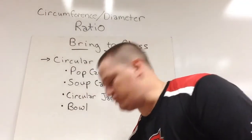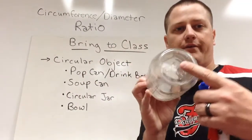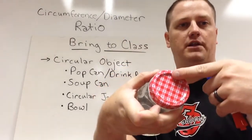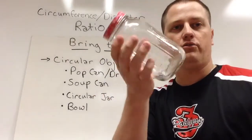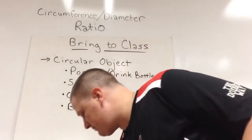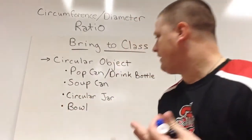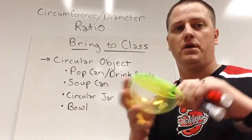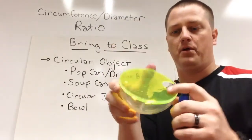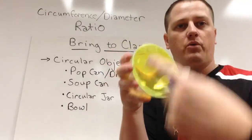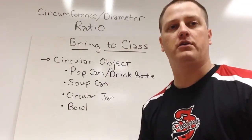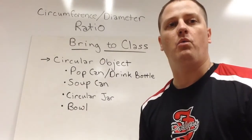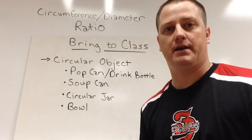A circular jar — I've got a jar here. We've got a circle on one end and a smaller circle on the other, so we could actually get two circles out of this. A bowl would be an example. This isn't an actual bowl, but it's the shape of a bowl and the rim would technically be a circle. What we need is for every person to bring one of these circular objects.